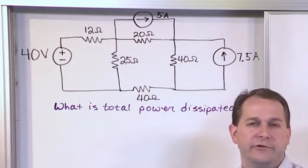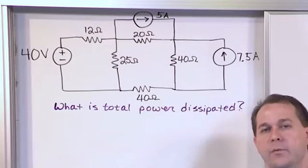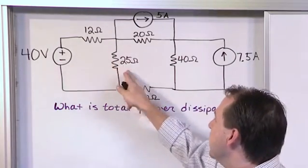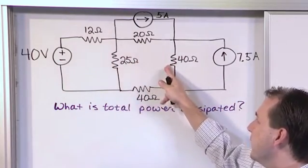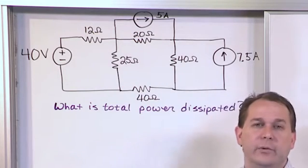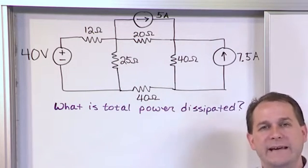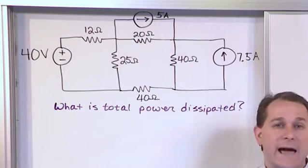Anytime you're asked what is the total power dissipated, you need to figure out what passive elements—in this case we have resistors here—are dissipating power. So we need to calculate the power dissipated by each resistor and then add them all together.